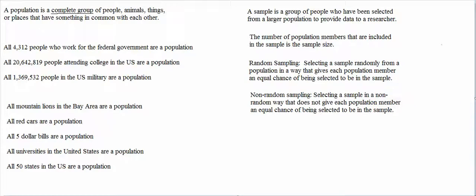The opposite of random sampling is non-random sampling. In non-random sampling, you don't select people randomly. You either select the population members that you would like to include in your sample, or you let people who say that they would like to be in your sample be in your sample. If you use non-random sampling, then not everyone in the population has an equal chance of being selected.